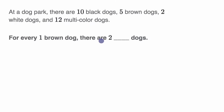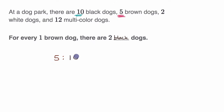For every one brown dog, there are two blank dogs — so what type of dog appears twice as often as brown dogs? For every five brown dogs, there are 10 black dogs, meaning the number of black dogs is always twice the number of brown dogs. So for every one brown dog, there would be two black dogs. The ratio of brown to black is five brown for every 10 black, and if you divide both numbers by five, you get one brown dog for every two black dogs. That's exactly what this statement is saying.